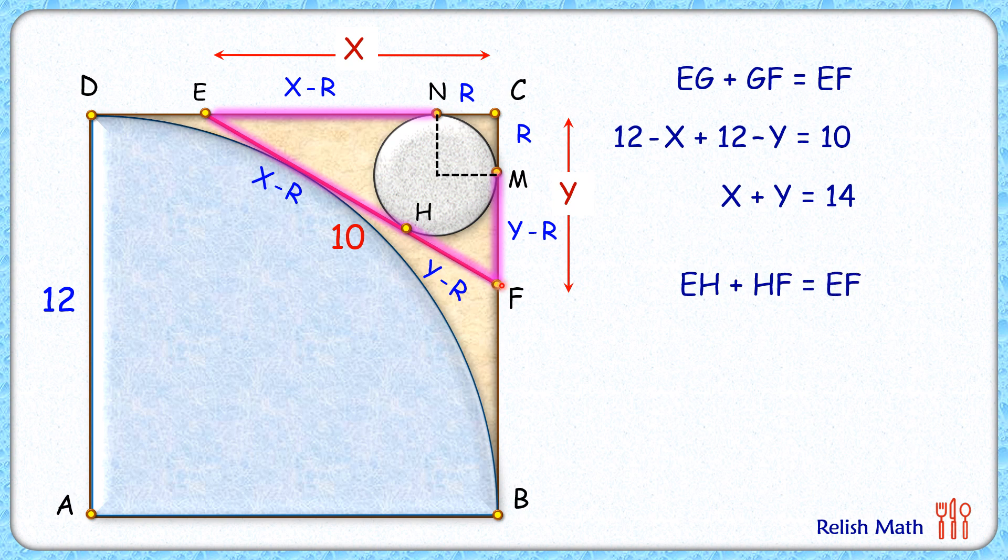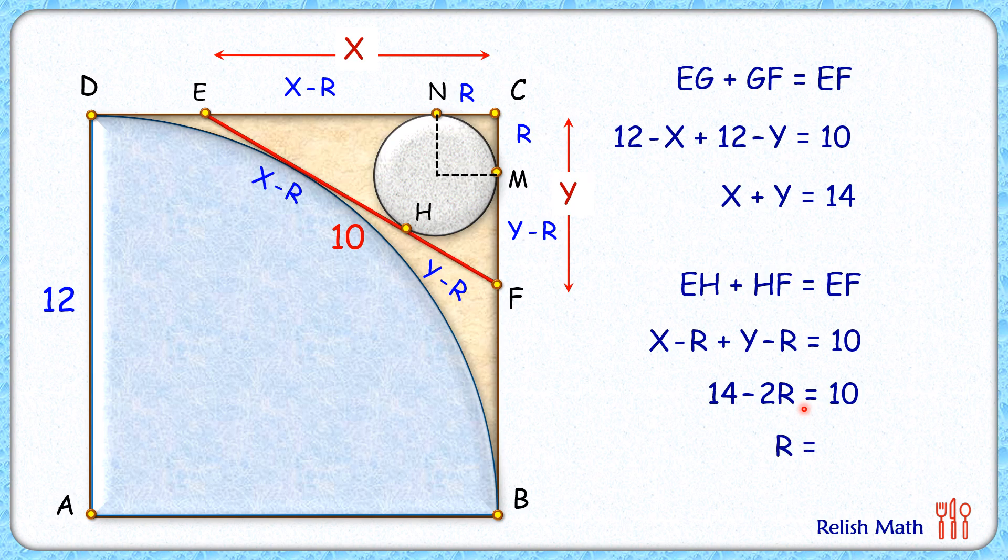Putting the values of EH as x minus r, HF as y minus r, and the full length is 10. Now here putting the values of x plus y as 14 centimeters, so we get 14 minus 2r is 10. Solving it we'll get 2r is 4, or r is 2 centimeters. And that's our answer.